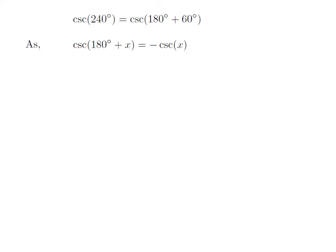As we know, the trigonometry identity cosecant of 180 degrees plus x is equal to minus cosecant of x. The video explaining how to derive this identity is appearing in the upper right corner. Also, the URL address of the video has been mentioned in the description section.